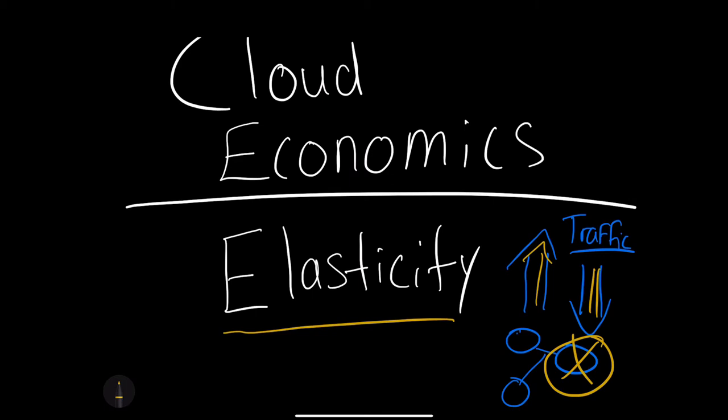A utility is a great example of the concept of elasticity. If you need more air conditioning, you can get more power from the power company. Likewise, if you don't, you can turn off your thermostat and not get that electricity. The same concept applies with cloud computing. This is probably one of the most fundamental concepts to master — understanding that when more traffic comes in you scale up, and when less traffic is there you scale down.